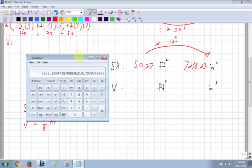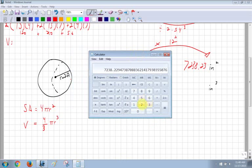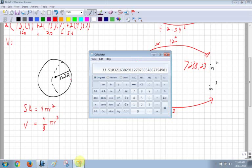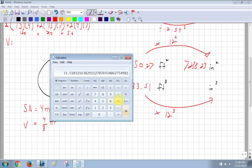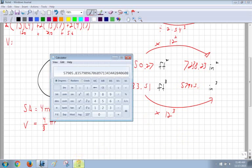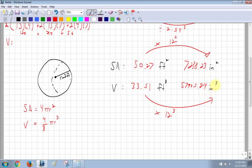For volume, same kind of deal here. So I have the radius of 2 cubed, which is 8, times by pi, times by 4, divided by 3, which is 33.51. This time I'm converting to inches cubed from feet cubed, so I multiply by 12 cubed. And I get 57905.84 inches cubed.